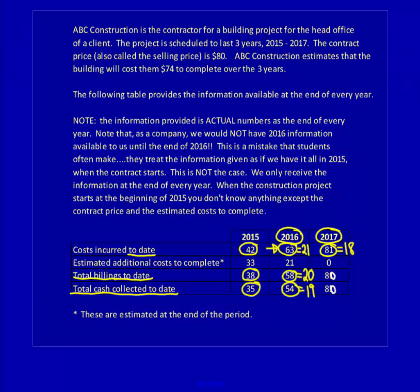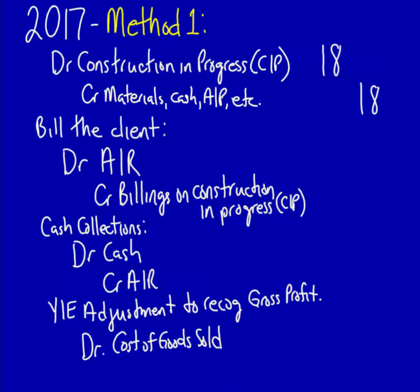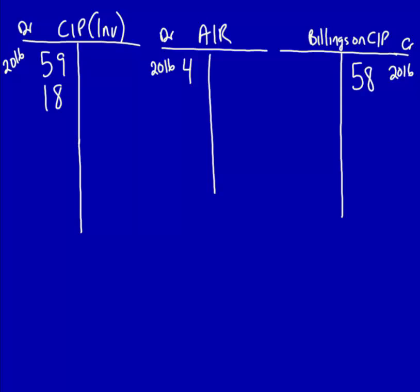Next, we bill our client and have to record the billings. We have total billings to date of $80. Subtract the total billings from 2016 year-to-date of $58, which gets us $22. The entry is: debit accounts receivable $22, credit billings on CIP $22. Record in the T-accounts: debit accounts receivable $22, credit billings on CIP $22.